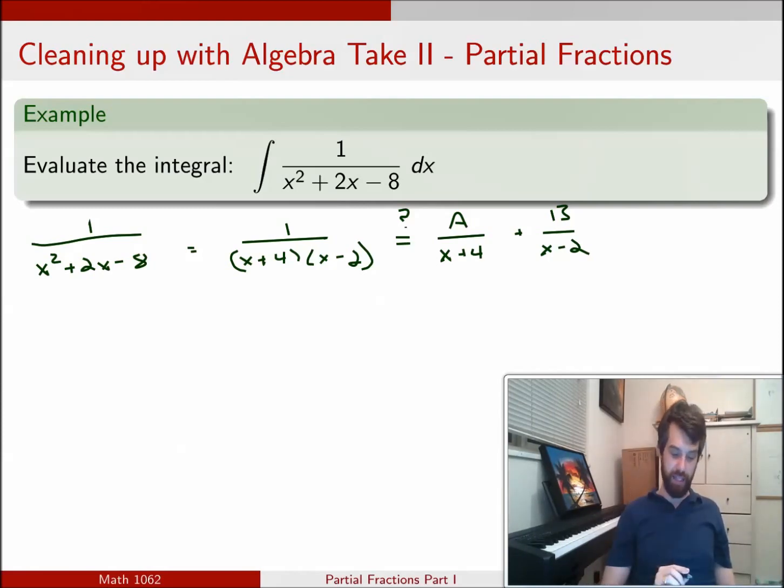is A over x plus 4, I can do that. That's just a u substitution. It's going to be 1 over u. The integral is going to be a ln. Same thing, B over x minus 2. Any time I have these little linear things on the denominator, I can integrate those.